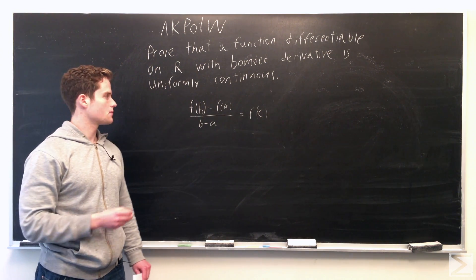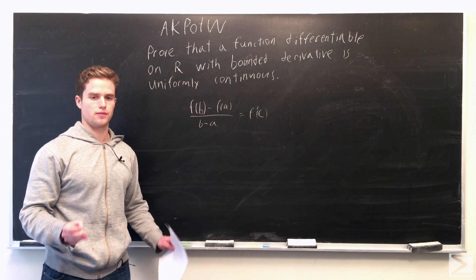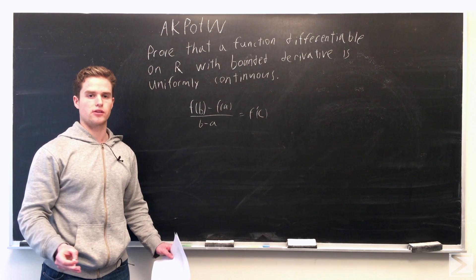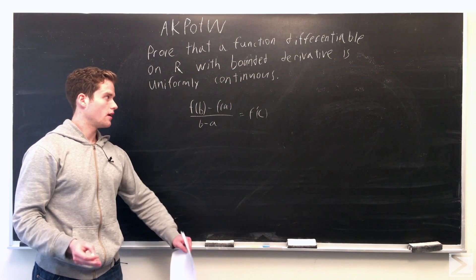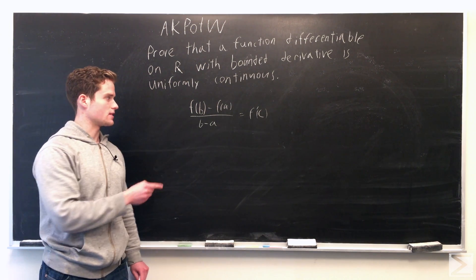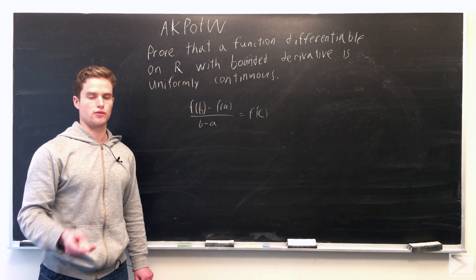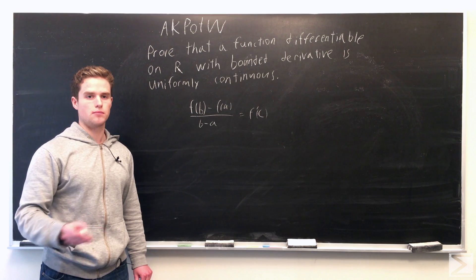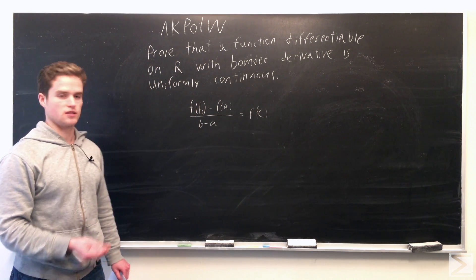So given that a function is differentiable on the open interval b to a and continuous on the closed interval b to a, we know that f of b minus f of a over b minus a equals the derivative of f at some point c between b and a. So that's the mean value theorem.